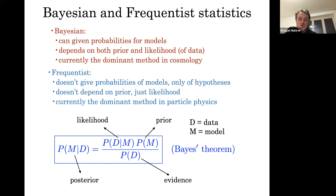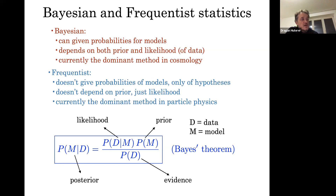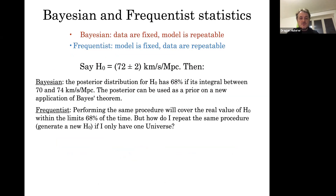Bayesian methods can give probabilities for models — probability for a dark energy model, or for neutrino mass greater than zero — and they depend on both the prior and the likelihood. This is currently the dominant method in cosmology. Frequentist methods don't give probability of models, only of hypotheses — you can reject or not reject a hypothesis. Frequentist methods don't depend on the prior, just the likelihood — something frequentists like. Particle physics experimentalists are predominantly frequentists.